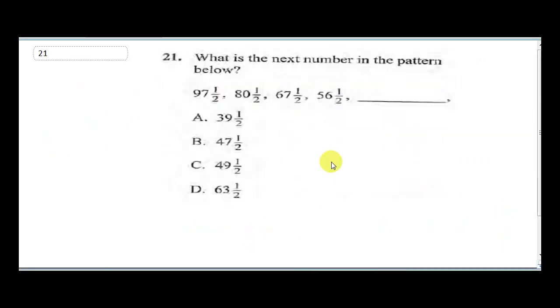Question 21 says what is the next number in the pattern below? Now let's study the pattern. We have the first one is 97½ and we have 80½. Now when you study these two numbers, the difference here between both of them, it's 17. So yes, when you add 17 to 80½ you get this. So the next number is 67½. Now the difference between these two, it's 18 minus 67 will give us 13.